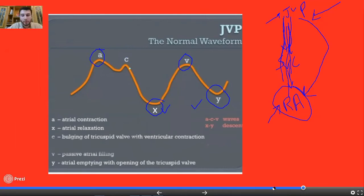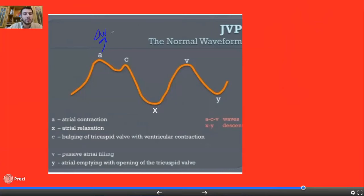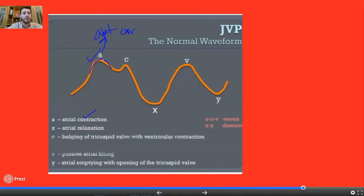First of all, we'll talk about the A wave. The A wave is produced by atrial contraction. When the atria contract and push approximately 20% of blood into the ventricle, the right atrial pressure increases, which raises the jugular venous pressure — and we see an A wave, which is due to atrial contraction.